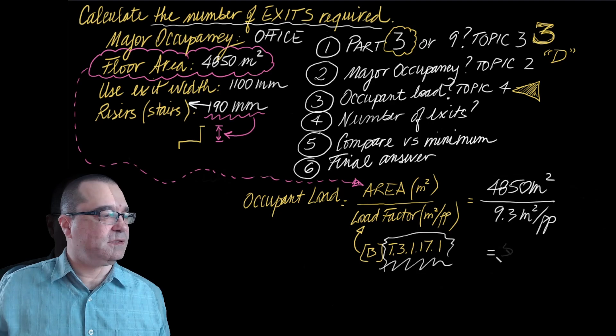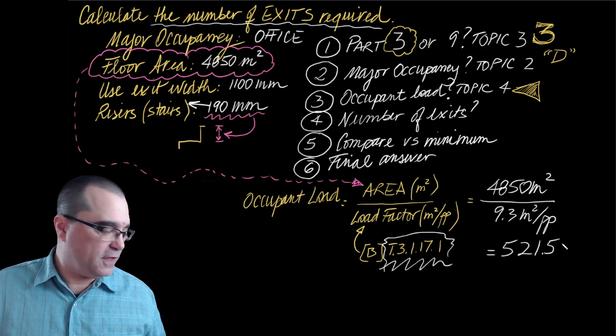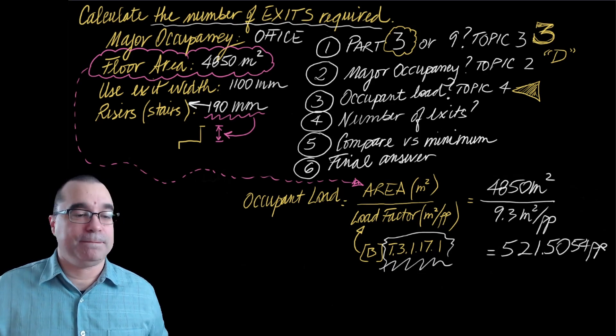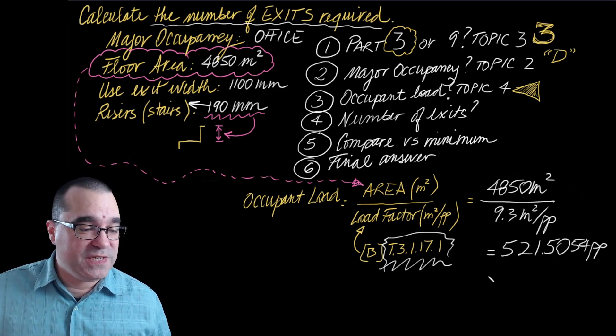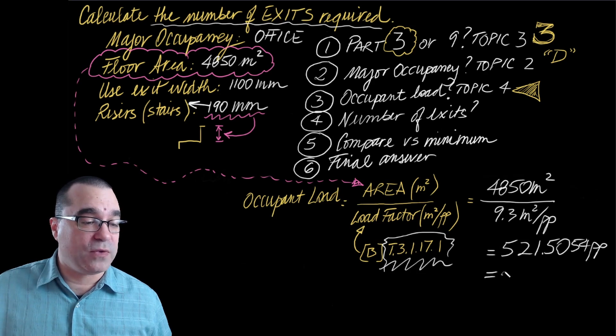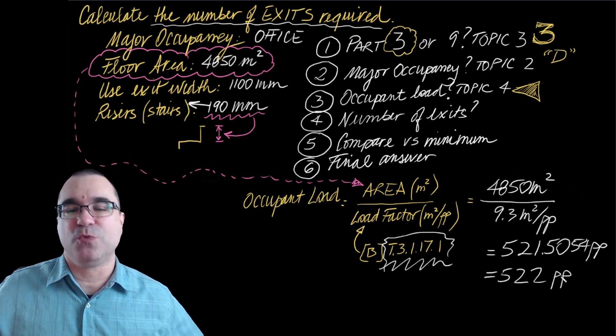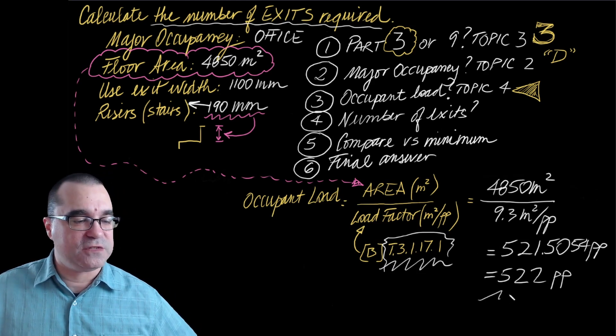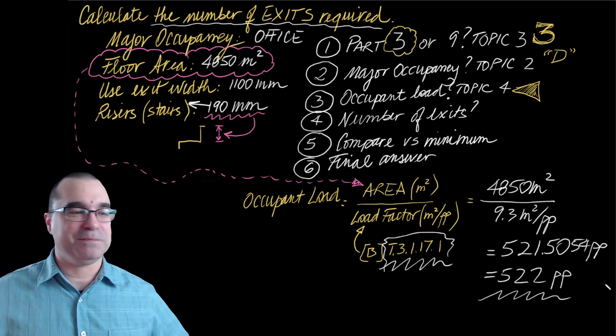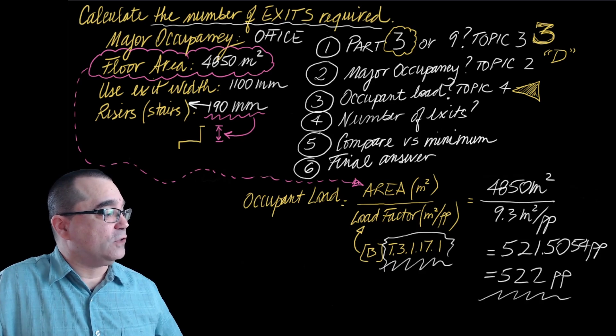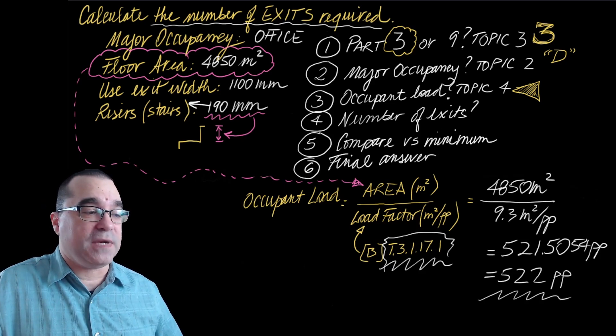So when I calculate that number, I get 521.5054, and so on. Because human beings are a whole number, we always round up because this number means more than 521. And the smallest whole number that is more than 521 is 522. Awesome. We now have, according to step number three, the occupant load for this space. Let's move on to step number four.